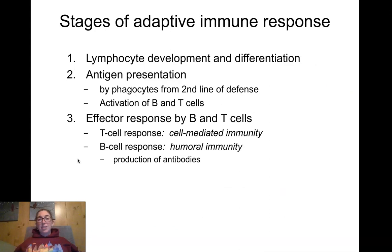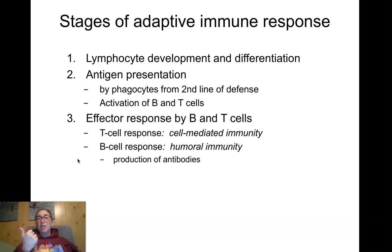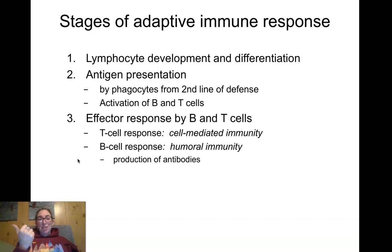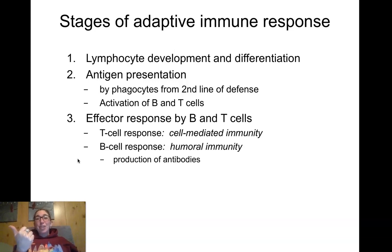Now let's talk about the stages of the third line of defense, the adaptive immune response. I'll give you an overview and then go into detail. The first thing that has to happen is your lymphocytes — your B and T cells — need to develop and differentiate. They start as stem cells in the bone marrow and mature into naive lymphocytes ready to do their thing. The second stage is antigen presentation, where they are exposed to antigen for the first time.